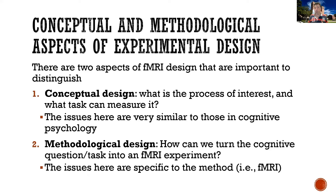A second aspect I will refer to as the methodological design. This is about how we can turn a cognitive question of interest — say, how does semantic processing work — into a design that is amenable to the constraints of fMRI. The issues encountered here are specific to the method being used; in our case, fMRI.